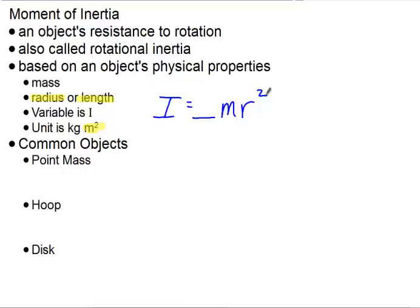We have three commonly known objects you need to know. The first is a point mass. Point masses are objects that are not really rotating, they're more revolving. When we have an axis of rotation, and an object revolving in a circular path, like a planet going around or the moon going around the earth, we could treat that as a point mass.